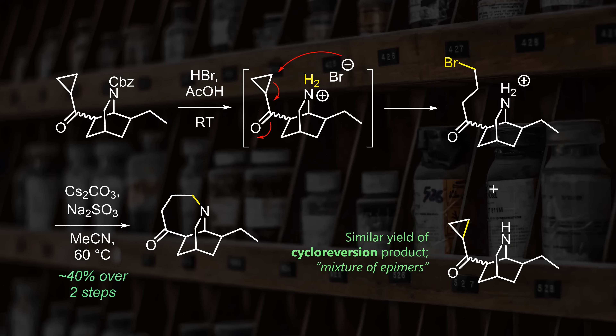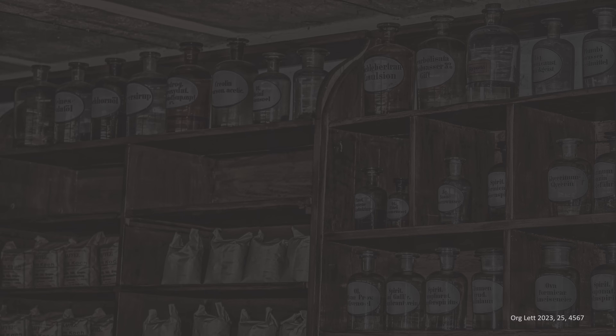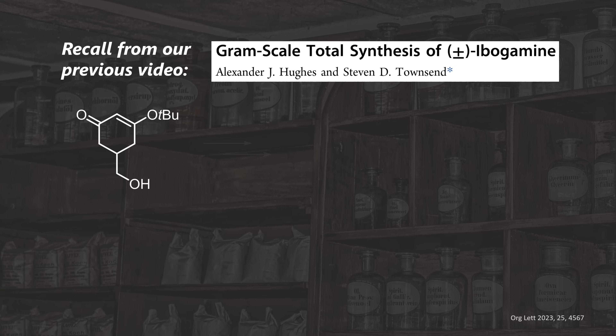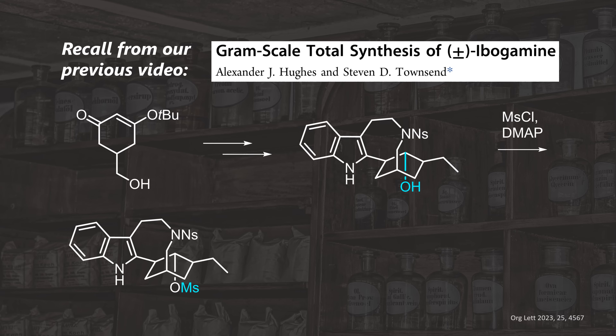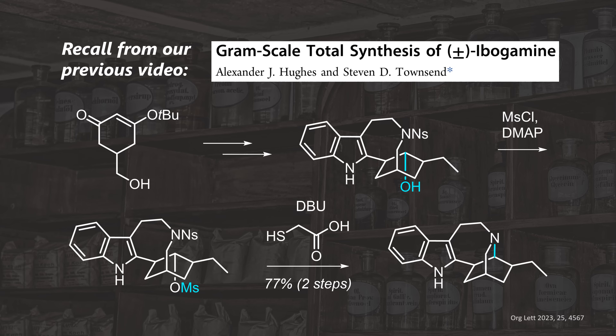There are parallels to the gram-scale synthesis of Ibogamine — Ibogaine without the methoxy group — that was discussed previously. In that work, deprotection and intramolecular nitrogen alkylation were also used to create the seven-membered ring, just in the other order.